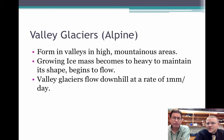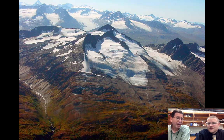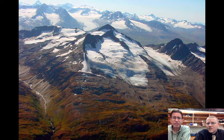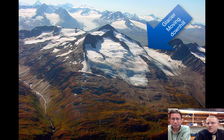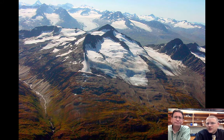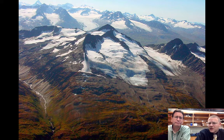Valley glaciers or alpine glaciers form high in mountain areas where we can get a lot of snow. Even in warm regions, in mountain areas it's colder, so you can have glaciers form basically anywhere. And you can see here there are some glaciers at the tops of these mountains. On the right-hand side of the picture, you can see the glacier actually pushing its way down the mountain.